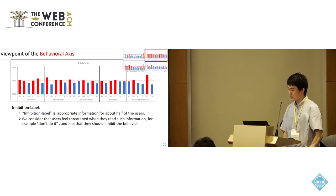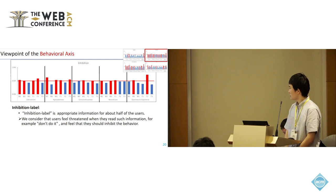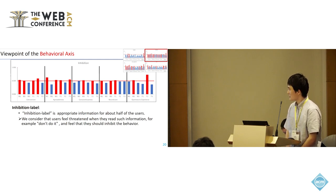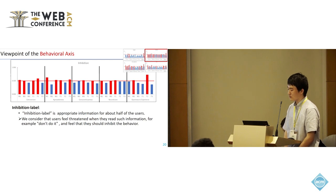The inhibition level is appropriate information for about half of users. We consider that users feel certain when they read such information — for example 'don't do it' — and feel that they should inhibit the behavior.